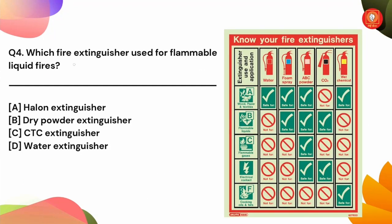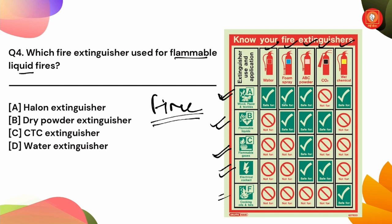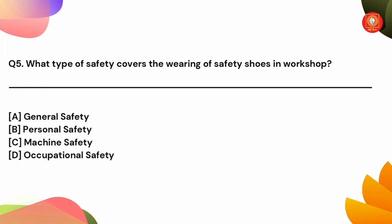Next, question number 4: which fire extinguisher is used for flammable liquid fires? The types are water, foam spray, powder, carbon dioxide, and wet chemicals. Our question is about flammable liquid fires. We have to use the second option: for flammable liquids, foam spray, powder, and carbon dioxide extinguishers are used. The answer is dry powder extinguisher — very important type of fire extinguisher.